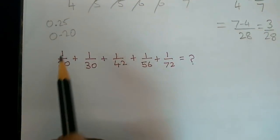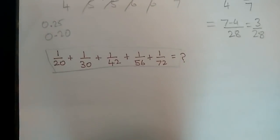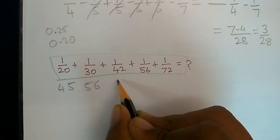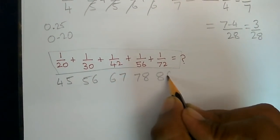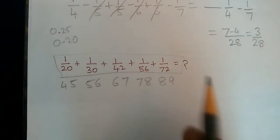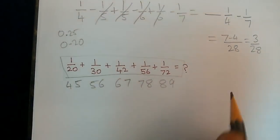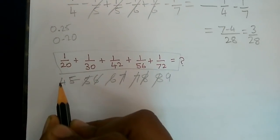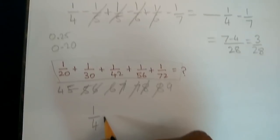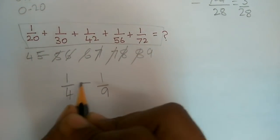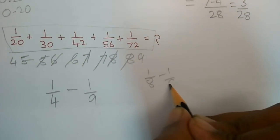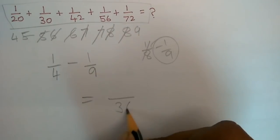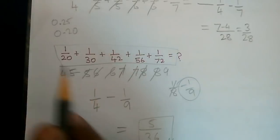Now we have to solve a longer problem: 4 into 5, 5 into 6, 6 into 7, 7 into 8, 8 into 9. The middle terms — 5 into 5, 6 into 6, 7 into 7, 8 into 8 — all cancel. The balance is 4 into 9, so the answer is 1 by 4 minus 1 by 9, which gives 5 by 36.